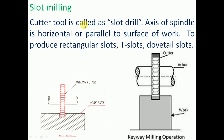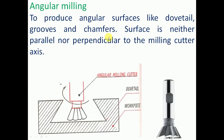Slot milling uses a particular tool called a slot drill. The axis of the spindle is horizontal, parallel to the surface of the work piece — both are horizontal. Slot milling is used to produce rectangular slots, T-slots, and dovetail slots. Depending on the shape of slot required — rectangular, T, or dovetail — we use the slot milling operation where the axis of the milling cutter is the same as the work piece axis.